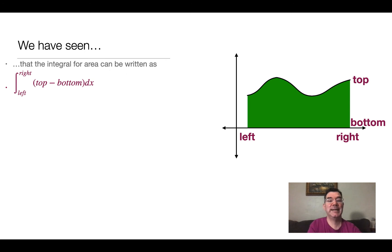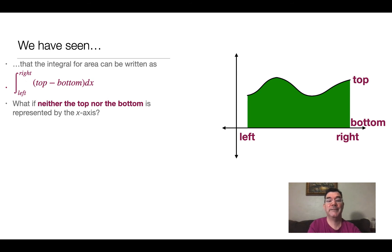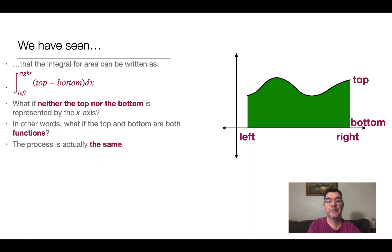In general, what we're doing is taking the antiderivative. The endpoints are a left endpoint and a right endpoint, and the functions being subtracted inside the integral are the top function minus the bottom function. But what if neither the top nor the bottom is represented by the x-axis? If I'm finding the area between two functions, the process is actually the same — as long as the endpoints are the leftmost and rightmost x values, and the functions are in the order top minus bottom inside the integral.